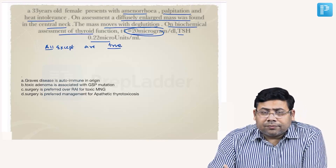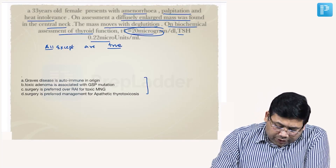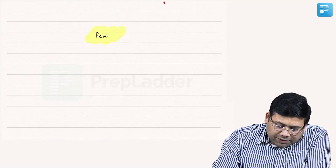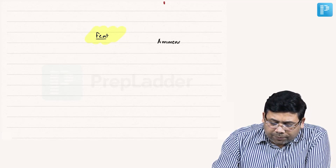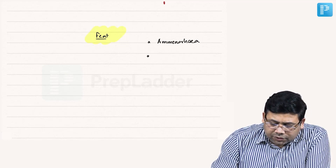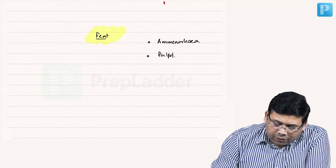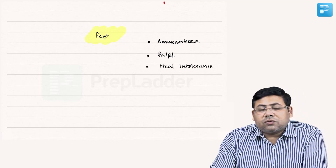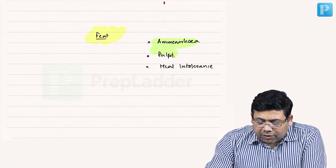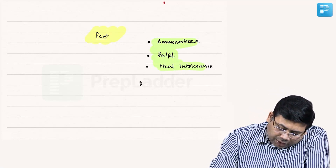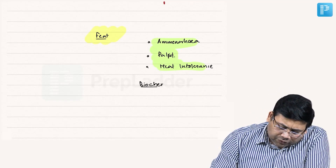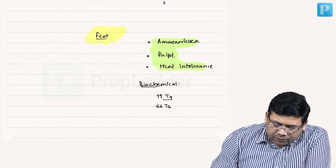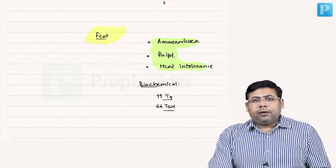How do we recognize hyperthyroidism? The classical features are amenorrhea, palpitations, and heat intolerance — along with weight loss, which is not mentioned here but is also a classical feature suggestive of hyperthyroidism. Looking at the biochemical profile, there is an increase in T4 and a fall in TSH, confirming this is a case of hyperthyroidism.